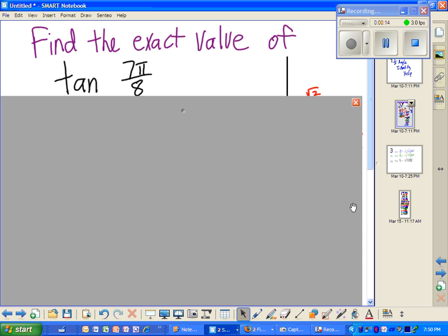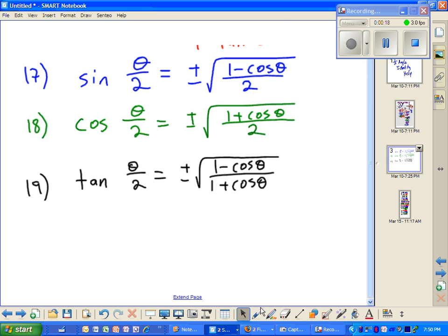Well, first of all, if we're going to use the half angle identity, let's take a peek at it. It's right here. The tangent, it's plus or minus square root of 1 minus cosine of theta over 1 plus cosine of theta. How do we know to use that?